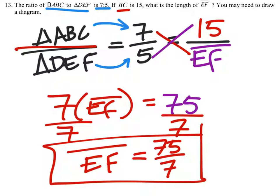Now, if it was a scale factor, it would say that ABC to DEF has a scale factor of 7 fifths. Then we would be multiplying, because it says it was a scale factor specifically.